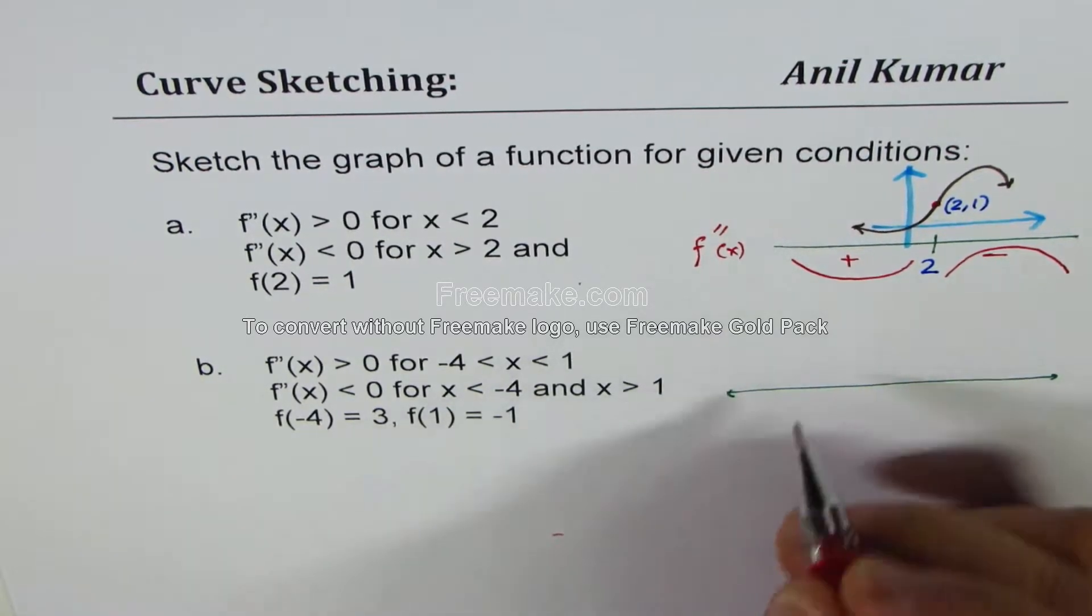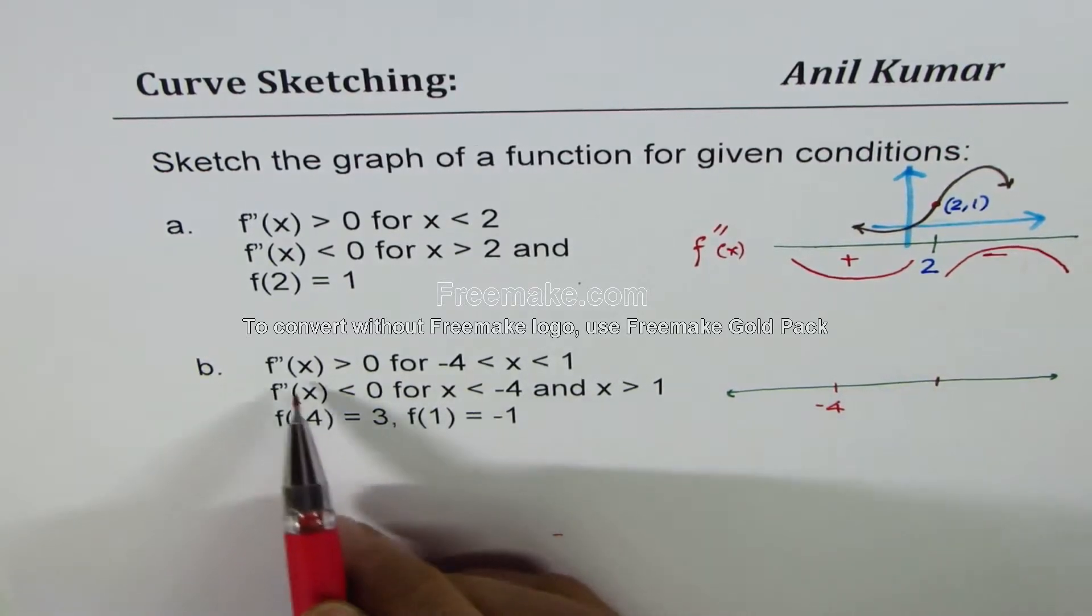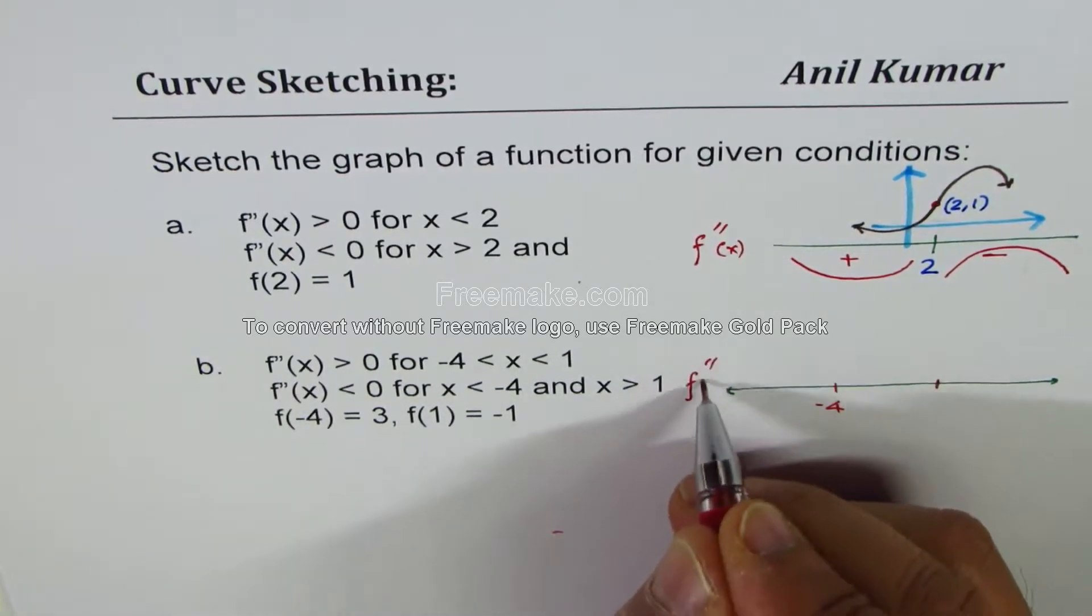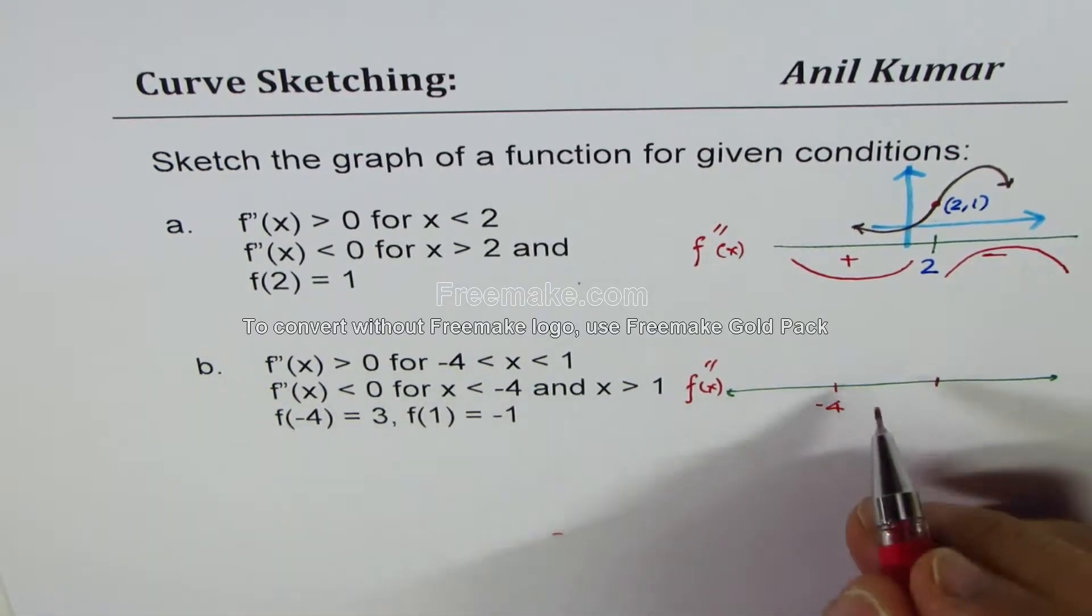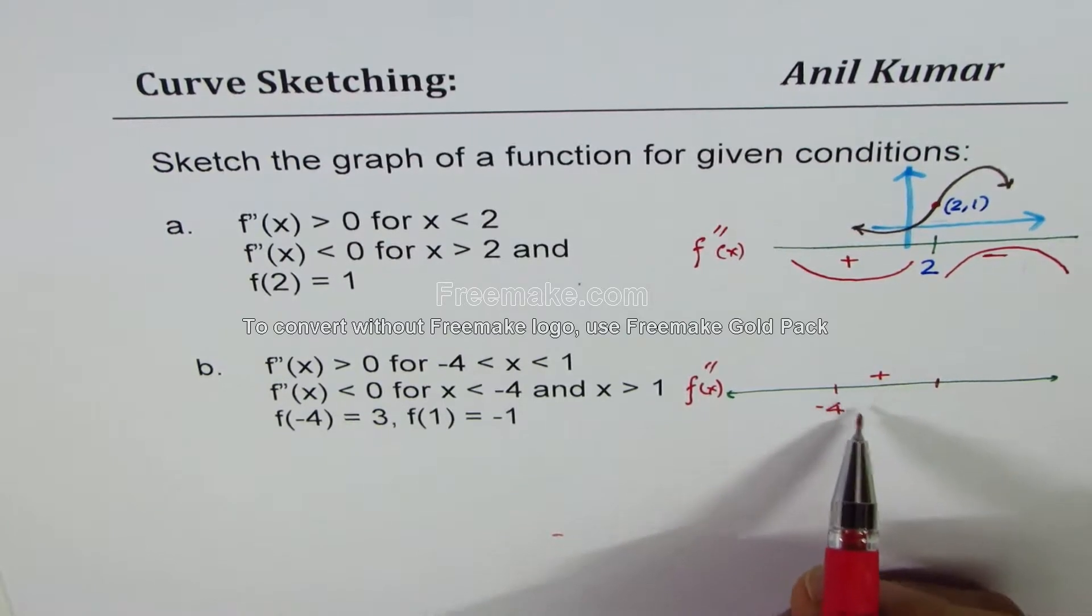We have -4 and 1. Second derivative, we are talking about the second derivative, is greater than 0. So this is positive here. Positive means concave up.